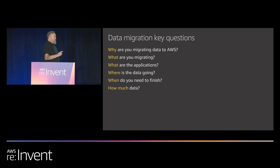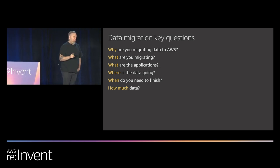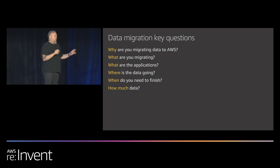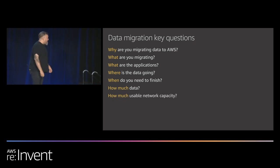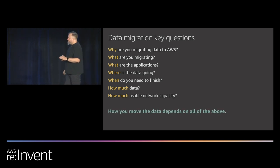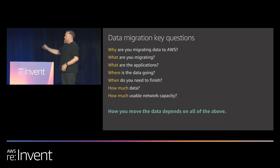How much data do you have? You probably have things hidden somewhere that you don't know about — there's probably a server sitting under somebody's desk with a file share on it. I've seen this time and time again. It may actually hold data that's critical to the business but lives in a shadow IT model. Also key: how much network capacity do you have? This is especially important when you decide whether to do an online or an offline migration, because your choice of services depends on all of these answers.